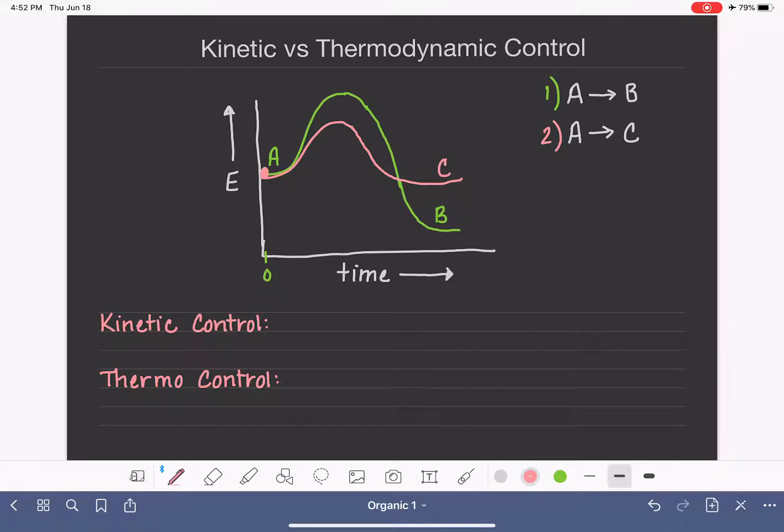So here are two different energy diagrams. They're stacked one on top of each other for two different options for molecule A. It could either take the green path and turn into B, or it could take the pink path and turn into C.